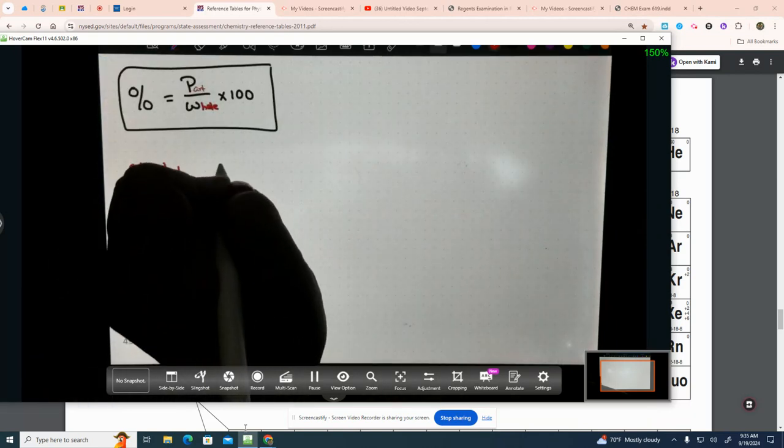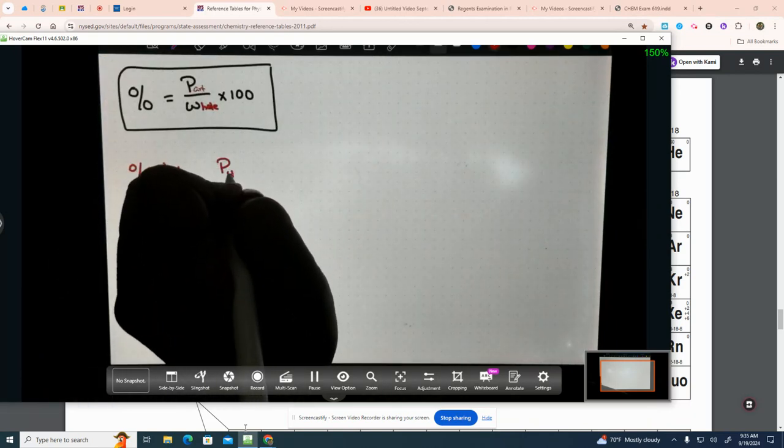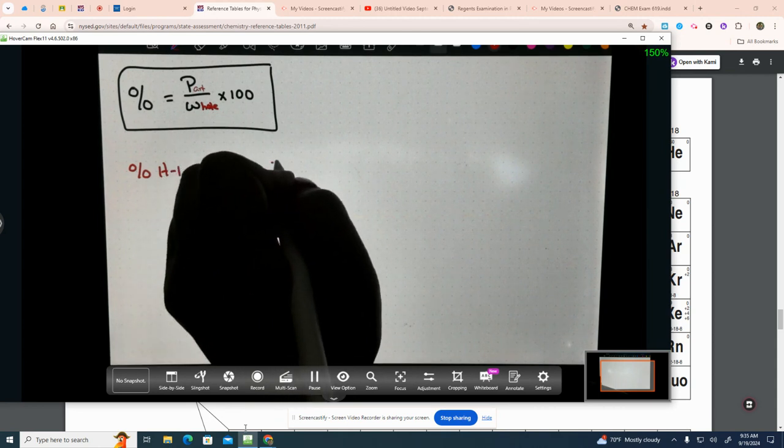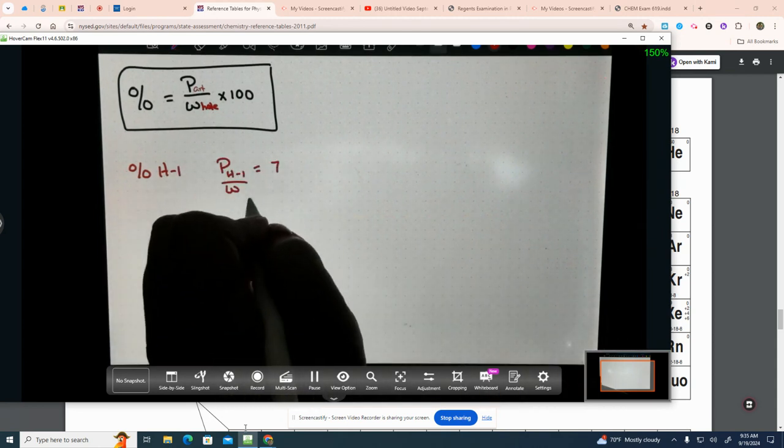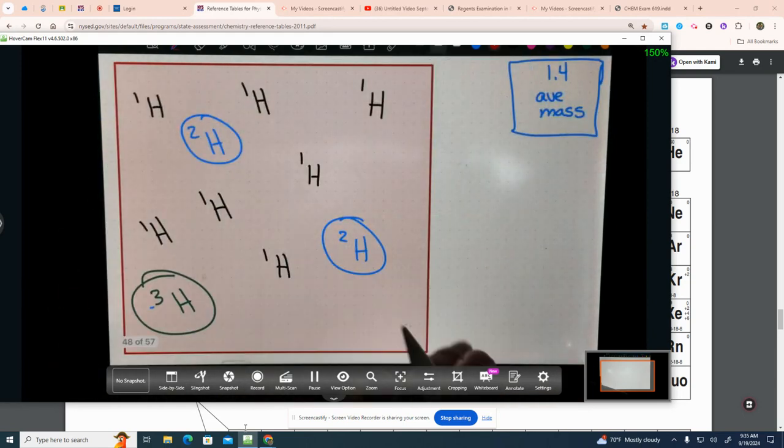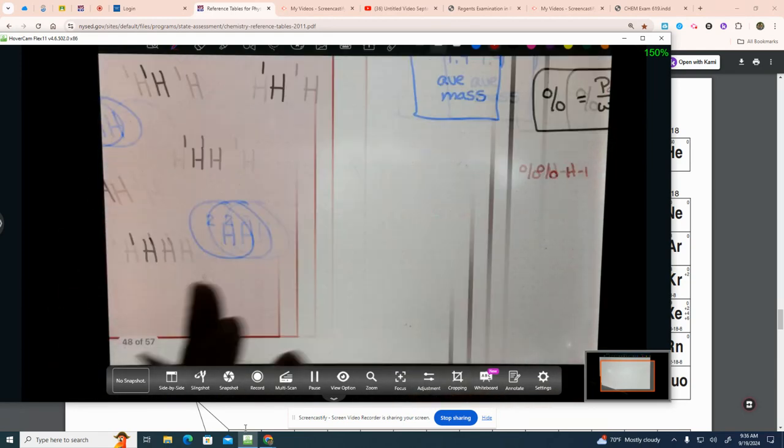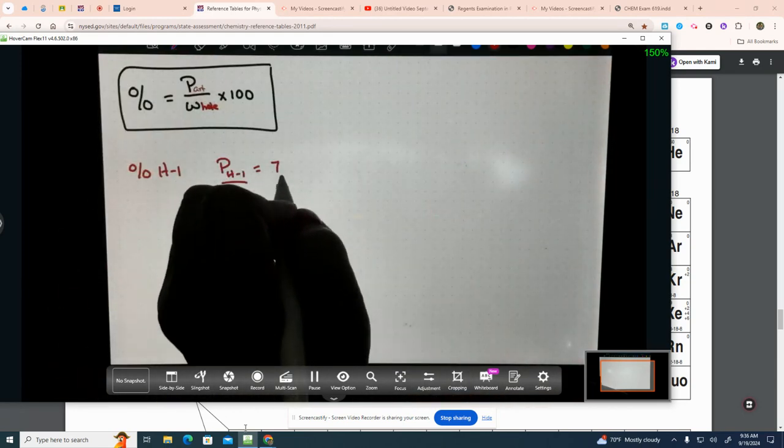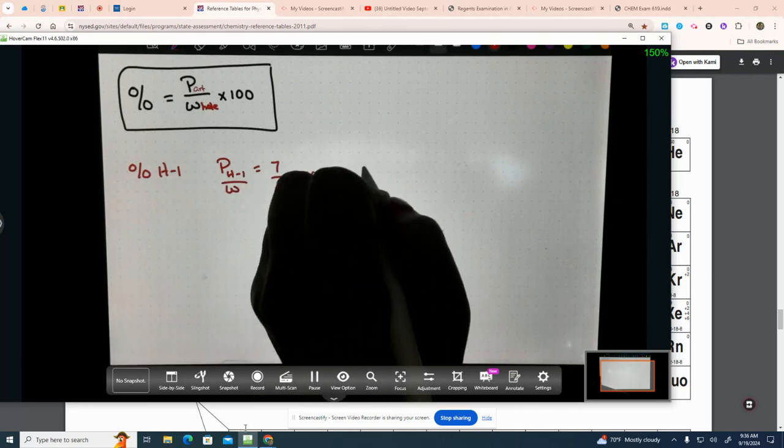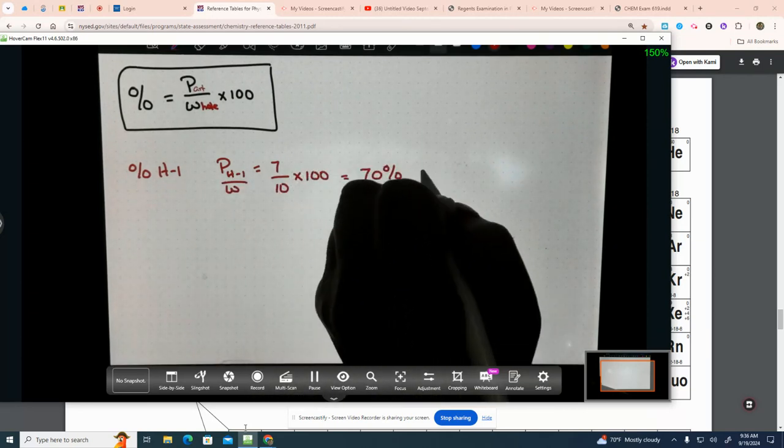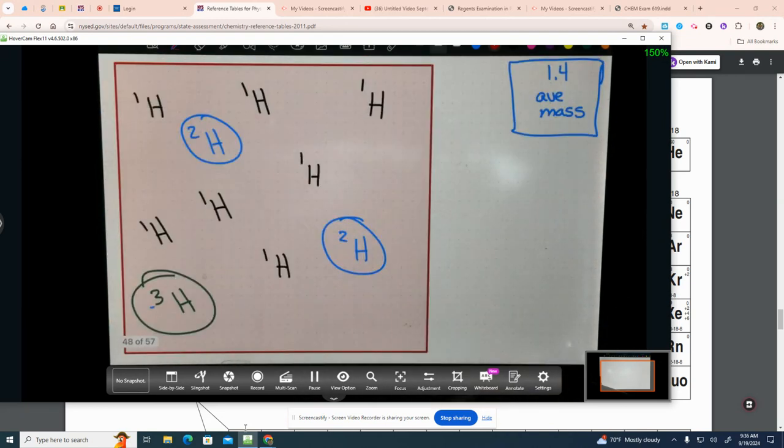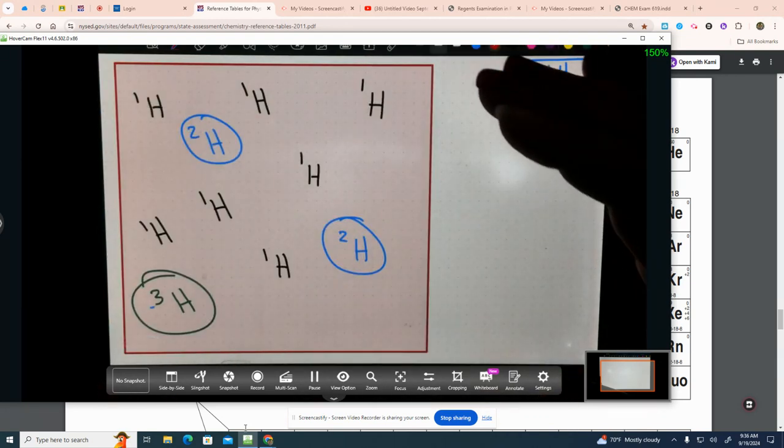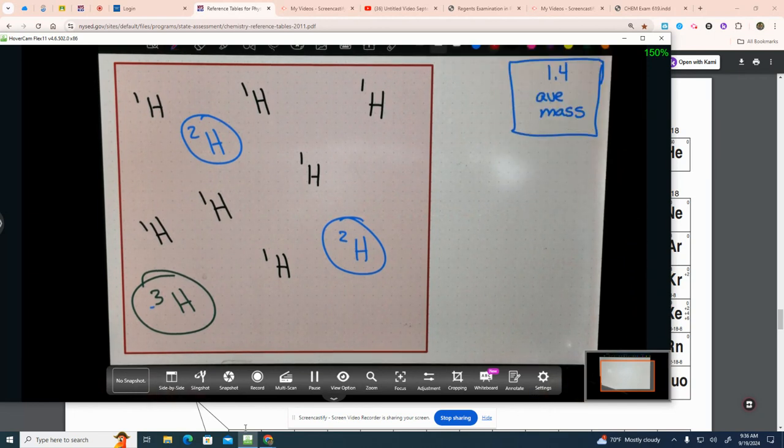So, the part that's H-1 is going to equal seven. And the whole thing, which is all of them, is going to be 10. Seven divided by 10 times 100 gives me 70% H-1s. So, in that sample, I've got 70% of my hydrogens are H-1s.